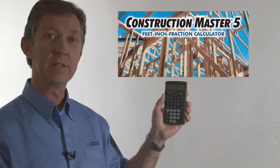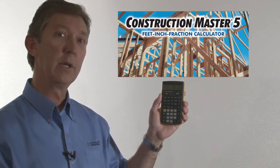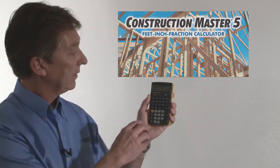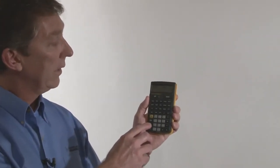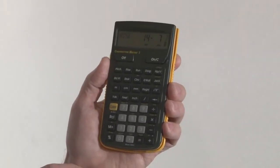The Construction Master 5 is an advanced construction math power tool that will save you and your crew time and money every time you use it. First off, it's a dimensional calculator with all the units that you're ever going to need to work in for linear area or volume calculations.